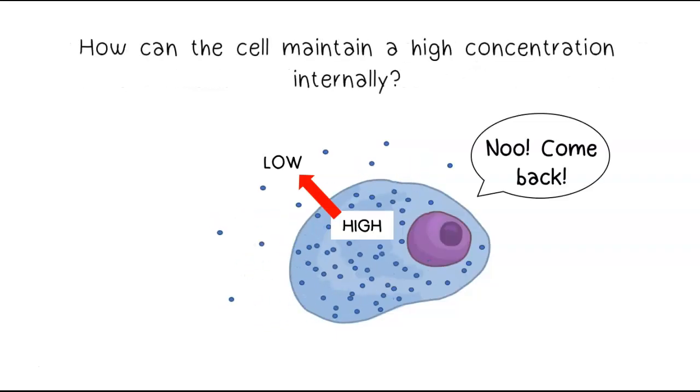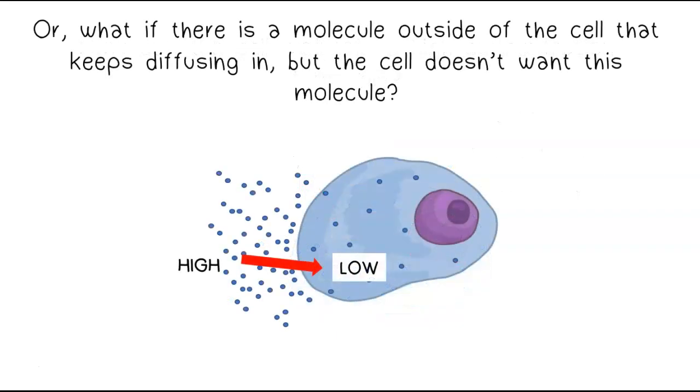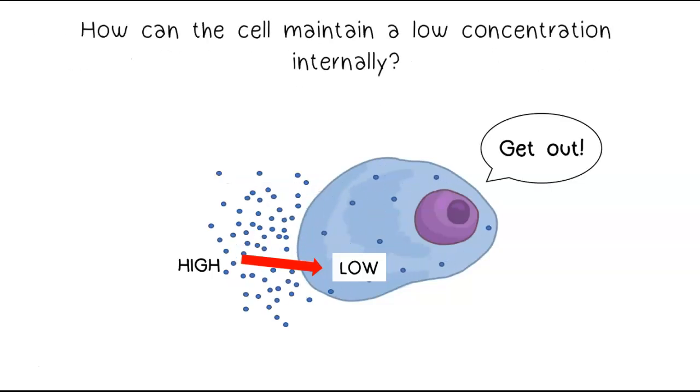How can the cell maintain a high concentration internally? Or what if there is a molecule outside of the cell that keeps diffusing in, but the cell doesn't want this molecule? How can the cell maintain a low concentration internally?